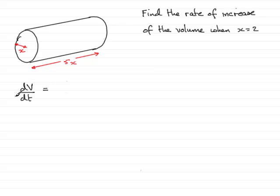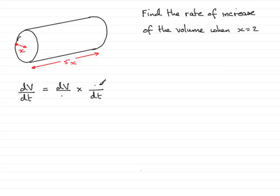Now, when we get a rate of change and we need to connect it with other rates of change, what I do is I write dv times dt down there. So what I'm looking for is a variable to put in here — a rate of change that is exactly the same. In this question, it's going to have to be dx, so I'll put dx there.